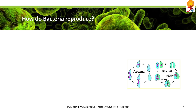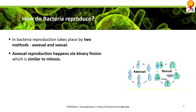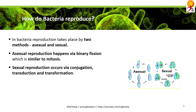How do bacteria reproduce? Reproduction can be either asexual or sexual in bacteria. In asexual reproduction, binary fission occurs, which is very similar to mitosis. In sexual reproduction, it is usually via conjugation, transduction, or transformation.